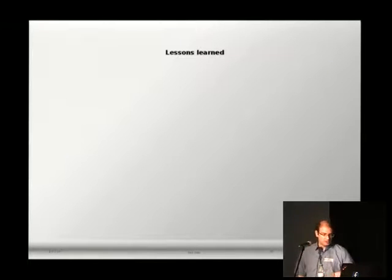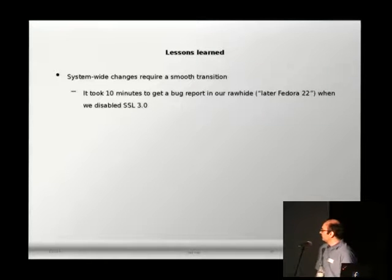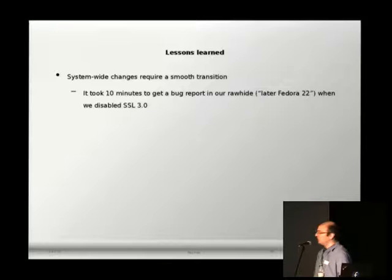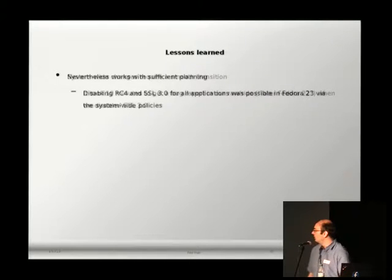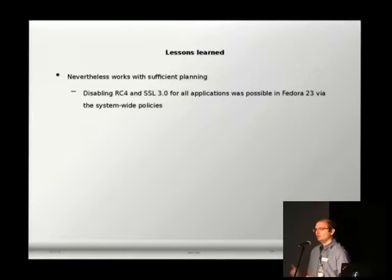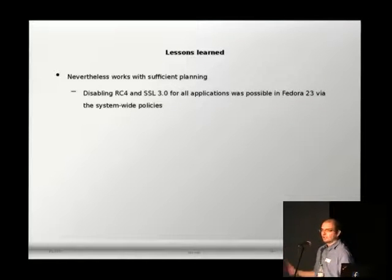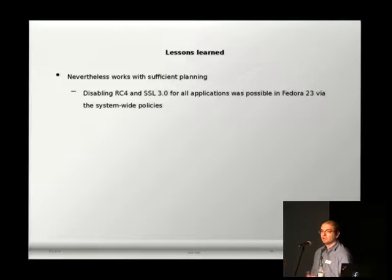In the lessons learned section: we realized we require a smooth transition. If you have system-wide policies, you cannot simply disable an algorithm and expect to release. We tested it — when we disabled SSL 3.0 in what became Fedora 22, ten minutes after committing I already had a bug report that some application broke. However, with sufficient planning it works. In Fedora we announce a change and wait six months until the next release. Following this process, we managed to remove RC4 and SSL 3.0 from most of the system in Fedora 23.